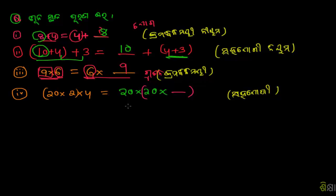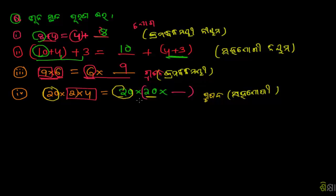The answer is 8 equals 6 into 9. The answer is 20 into 2 equals 20 into 10. The answer is 8 equals 6 into 10. The answer is 2 into 4.